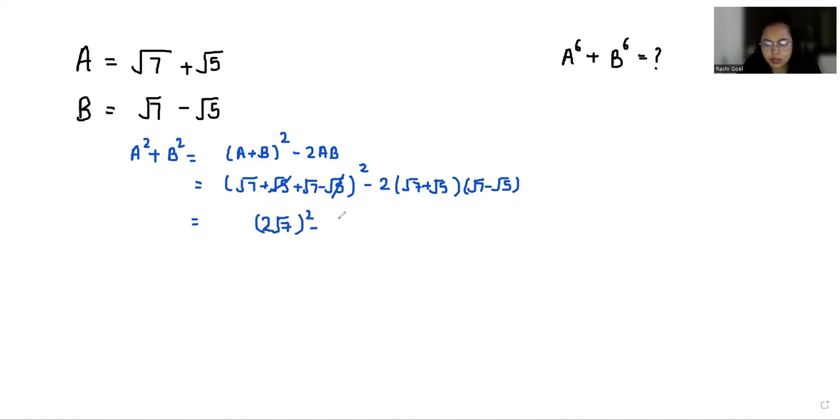Minus, if we multiply this: 2 times root 7 times root 7 is 7, root 7 times negative root 5 is negative root 35, plus root 35, negative 5. We can cancel out, so 2 square is 4 and root 7 square is 7, so 7 times 4 is 28 minus 2 times 2, so that is 28 minus 4. A square plus B square equals 24.